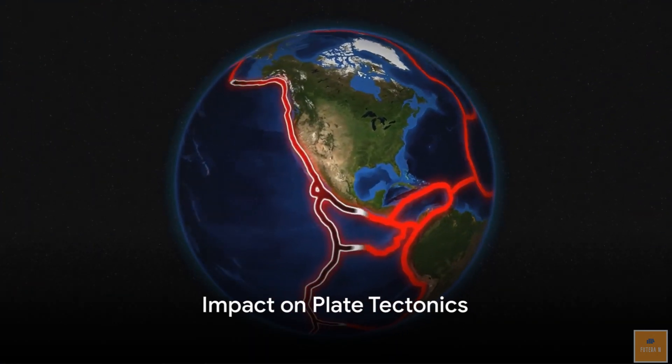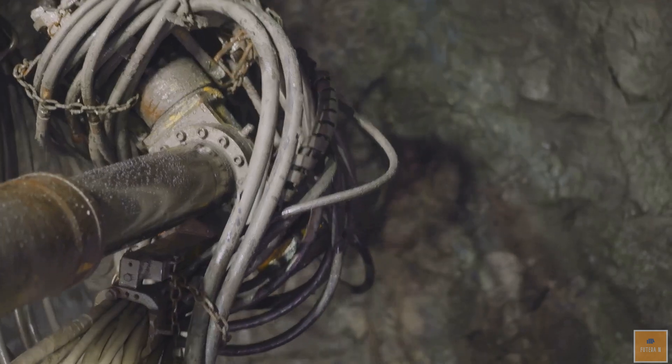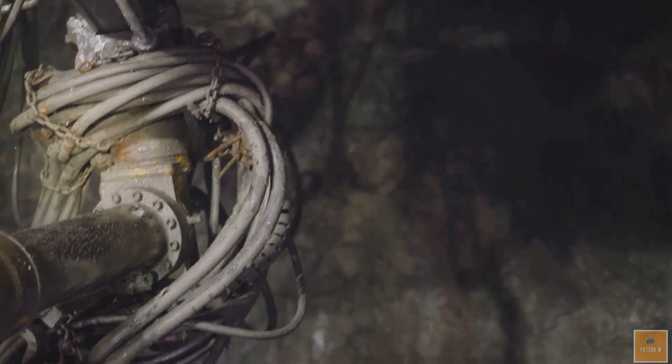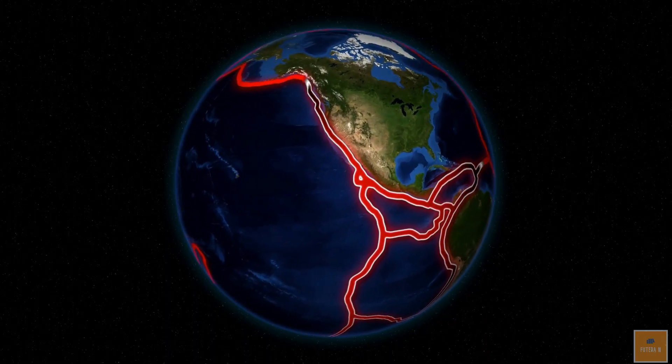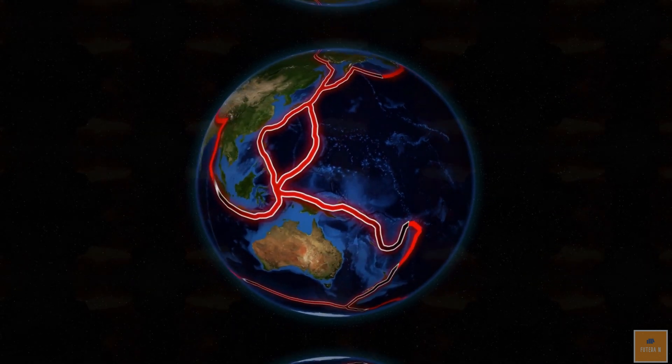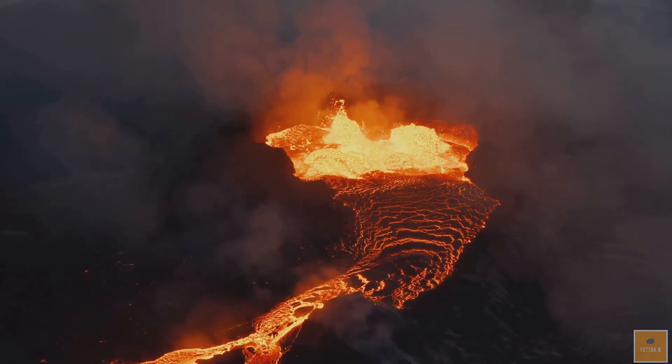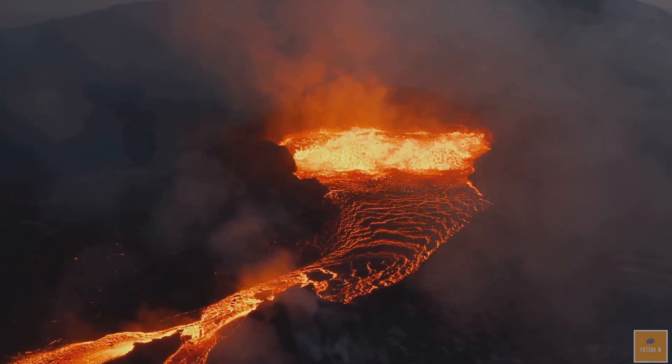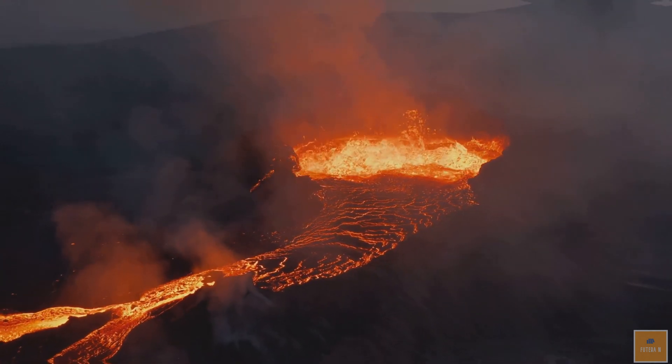Drilling through the Earth's crust would have a significant impact on the planet's plate tectonics. The drilling process would create a hole in the Earth's crust, which would weaken the surrounding rock and make it more susceptible to movement. This could lead to the formation of new fault lines and the shifting of existing ones, causing earthquakes and volcanic activity. Furthermore, drilling through the Earth's crust would affect the flow of magma and other materials within the mantle. This could cause changes in the Earth's magnetic field, which would have far-reaching consequences for the planet's climate and weather patterns.